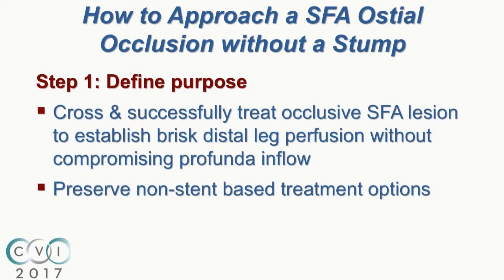When you think you have an osteal flush occlusion or an osteal occlusion without a stump, please define what you want to achieve. The clinical question we all face is that we want to restore flow to the superficial femoral artery, but we do not want to compromise the profunda femoris. Second, we want to do it in a way that we don't absolutely have to place a stent, as stent struts may extend into the common femoral artery, complicating our approach.